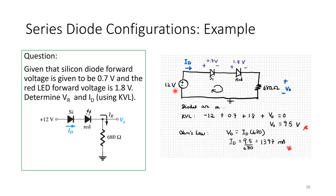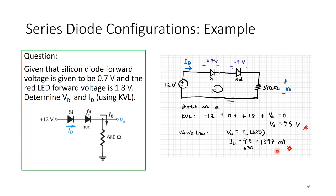The circuit has 12 volts connected to a silicon diode, a red LED, and a 680-ohm resistor all in series to ground. Both diodes will be on because 12 volts is enough to overcome both 0.7 V and 1.8 V. Applying KVL: minus 12 plus 0.7 plus 1.8 plus Vout equals 0, giving Vout equals 9.5 volts. Using Ohm's law across the 680-ohm resistor with Vout equals ID times 680, ID equals 13.97 milliamps.